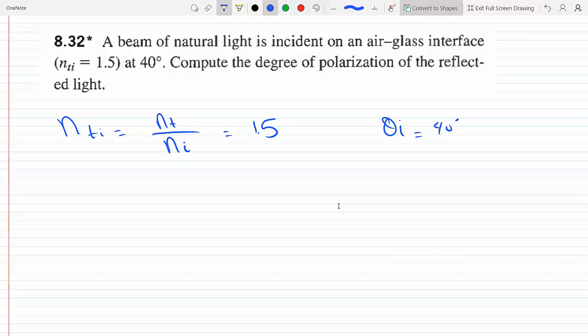We know from Snell's law that n₂ sin θ₂ equals n₁ sin θᵢ, so we can solve for θ₂ to be inverse sine of (n₁/n₂) times sin θᵢ.